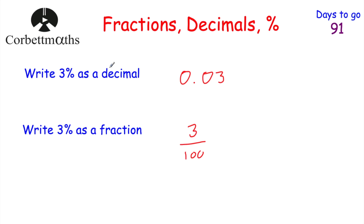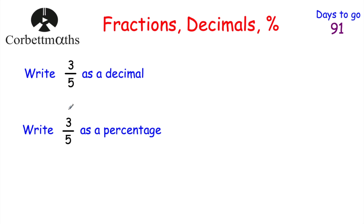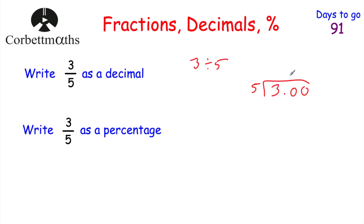We've looked at decimals as percentages, decimals as fractions, percentages as decimals, and percentages as fractions. Now let's look at writing fractions as decimals and fractions as percentages. The first one is to write 3 fifths as a decimal. The line in the fraction means divided by, so we do 3 divided by 5. Using the bus shelter method: how many fives go into 3? Zero remainder 3. How many fives go into 30? Six. So 3 fifths as a decimal is 0.6.